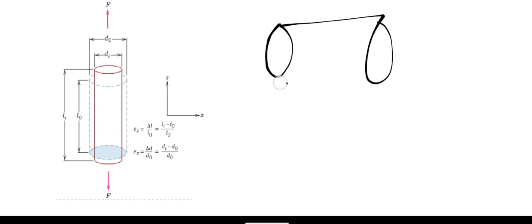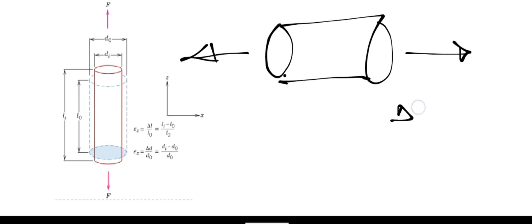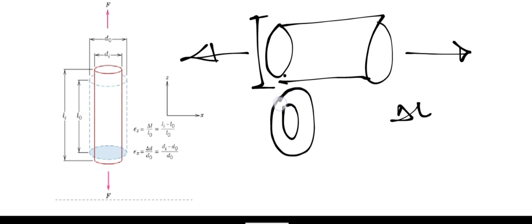Let's explain Poisson's ratio a little. Poisson's ratio is known to be the ratio of lateral strain over linear strain. For example, if we have a material of a certain length and diameter and we apply a force to it so that it elongates, we get a change in length. But the diameter will not stay the same — as length increases, the diameter is going to reduce.